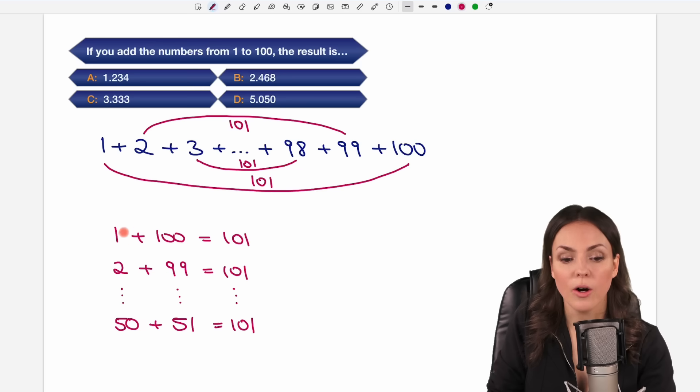So we now have all our numbers right from 1, 2, 3, 4, 5 to 50. Then we have 51 and up to 100. So if we add all these numbers we always get 101.